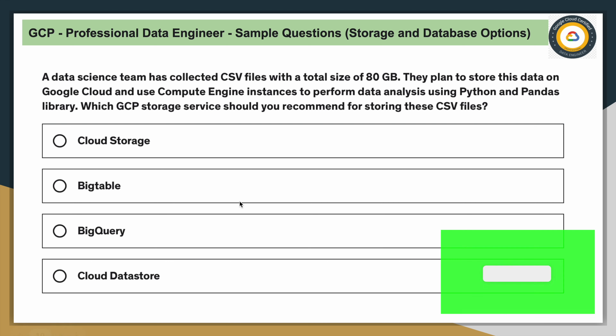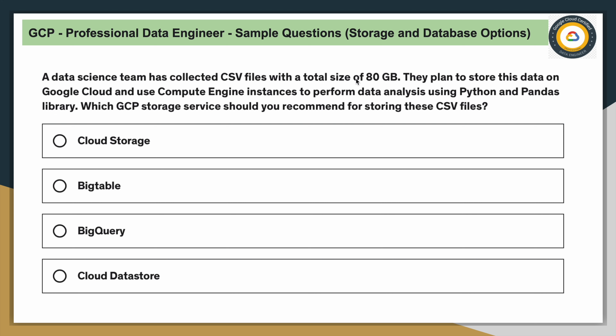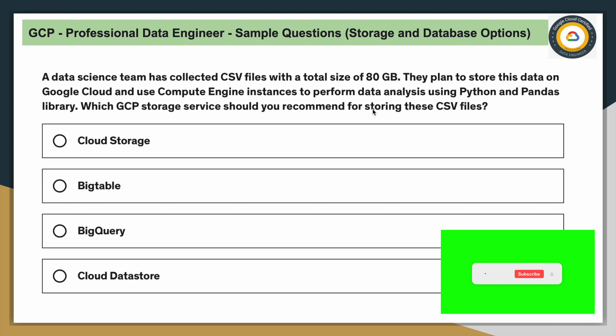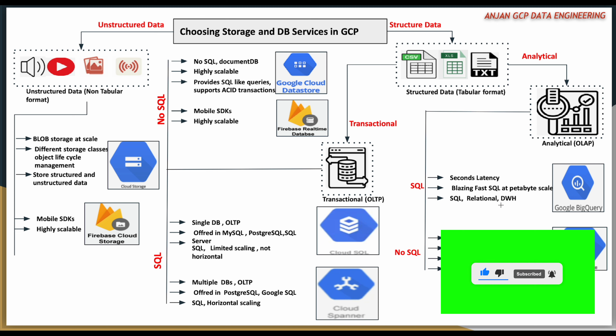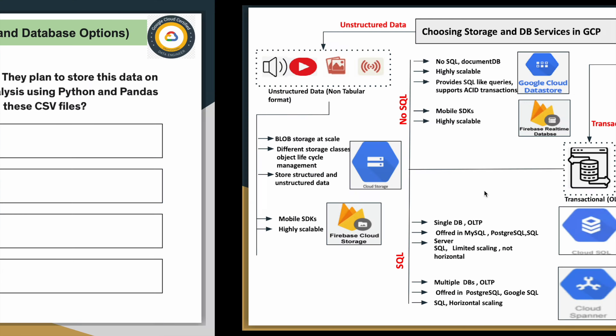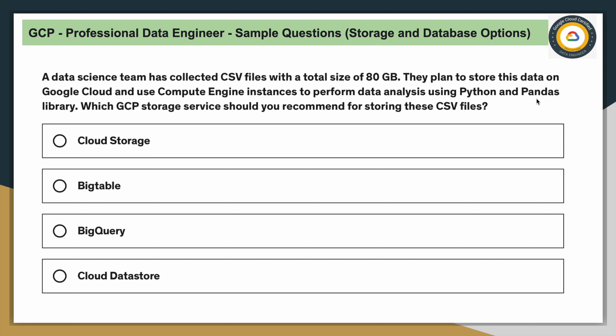BigQuery is another option — you can store CSV files as a table or external table and it supports 80 GB of data. However, the team specifically wants to use Python and Pandas for analysis. With BigQuery you use SQL, not Pandas, so you can ignore BigQuery. Cloud Datastore is for document-type databases, not CSV files, so ignore that too. Cloud Storage is the correct answer.